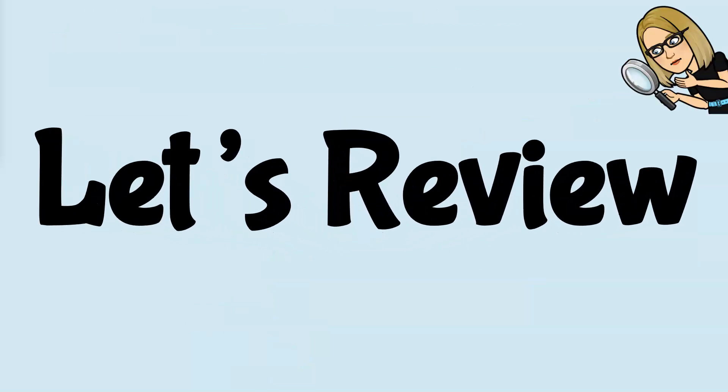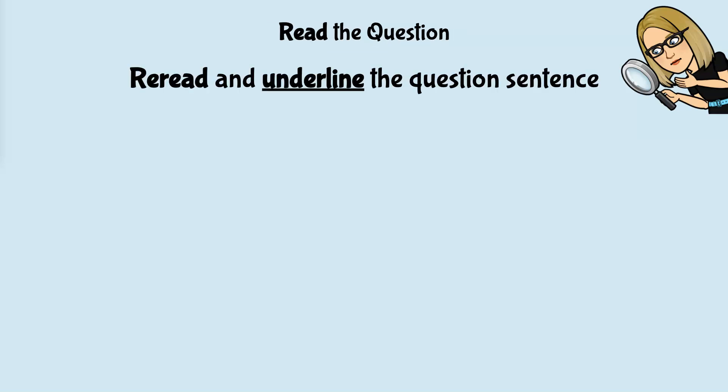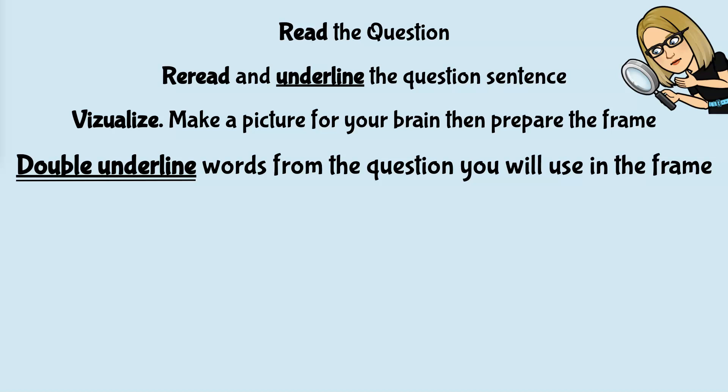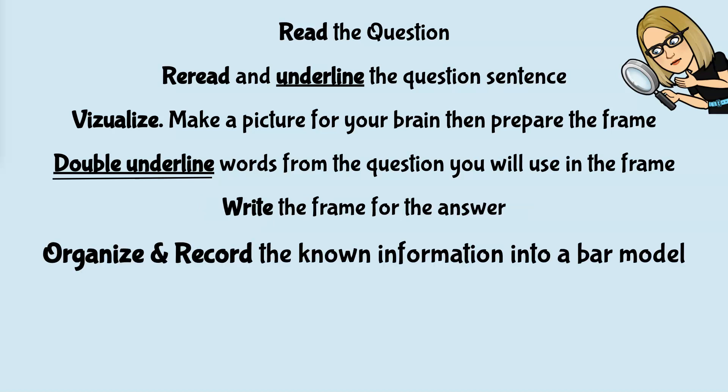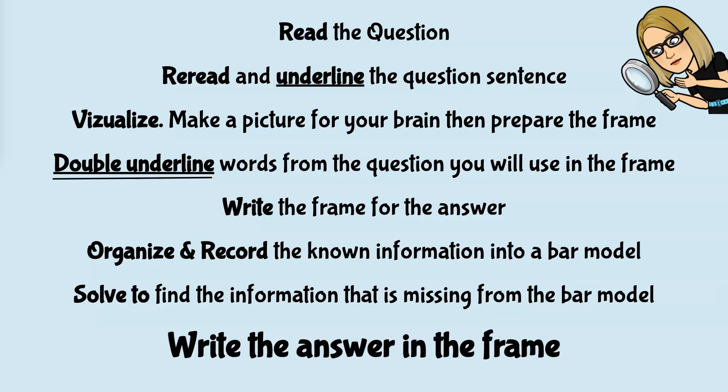Let's review the steps. First, read the question. Second, reread and underline the question sentence. Third, visualize. Make a picture for your brain. Then prepare the frame. Double underline words from the question you will use in the frame. Write the frame for the answer. Organize and record the known information into a bar model or number bond. Solve to find the information that is missing from the bar model or number bond. Write the answer in the frame.